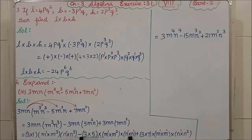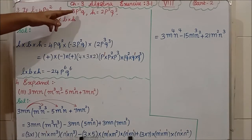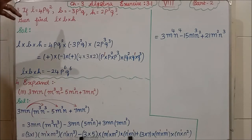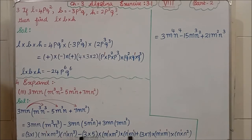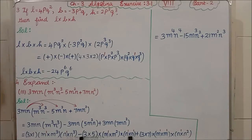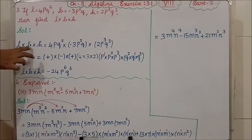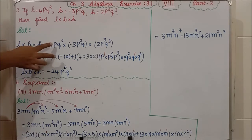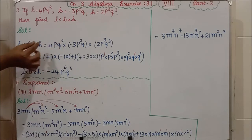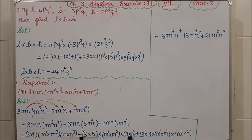See the third question. L is equal to 4PQ², breadth B is equal to −3P²Q, and H is equal to 2P³Q³. They are asking us to find L × B × H. All three terms we have to multiply separately.